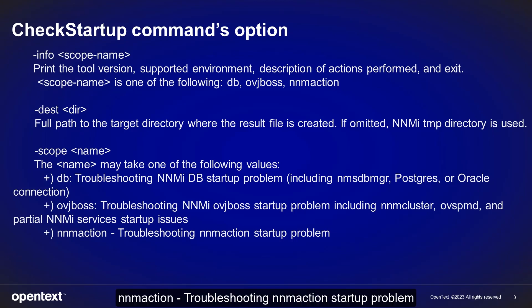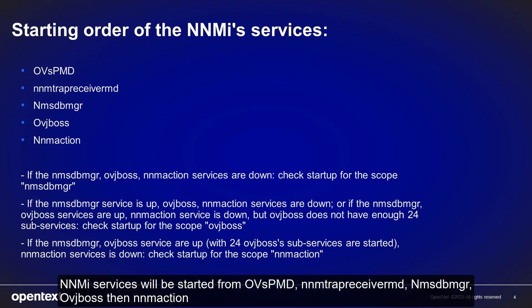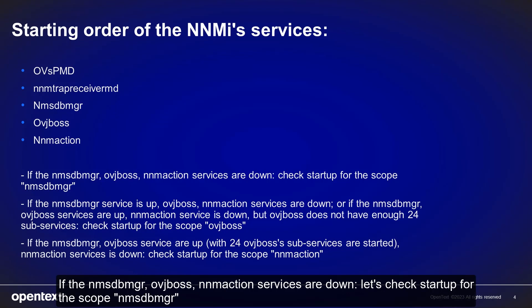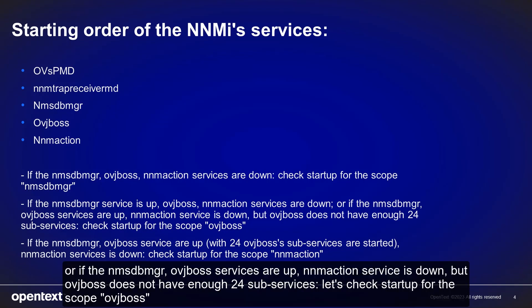So how to determine the scope name to run the command? We should understand the starting order of the NNMi services. NNMi services will start from OVS PMD, NNM trap receiver MD, NMS DB MRG, OVGbox, then NNMi action. If the NMS DB MRG, OVGbox, and NNMi action services are down, let's check startup for the scope NMS DB MRG. If the NMS DB MRG service is up but OVGbox and NNMi action services are down, or if NMS DB MRG and OVGbox are up but NNMi action is down, but OVGbox does not have enough 24 subservices, let's check startup for the scope OVGbox.